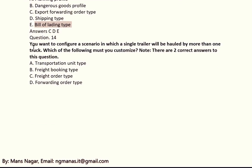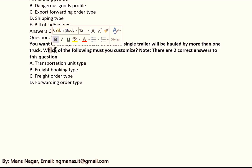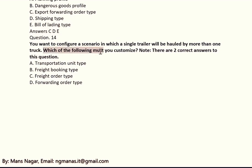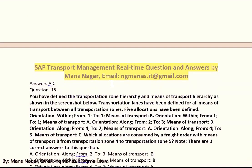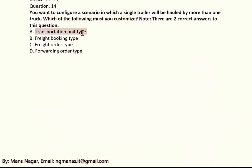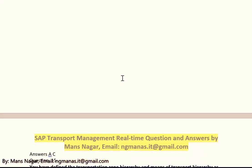You want to configure a scenario in which a single trailer will be hauled by more than one truck, where the truck would be hauled at different states. Which of the following must you customize? The correct answers are A and C — transportation unit type and freight order type.